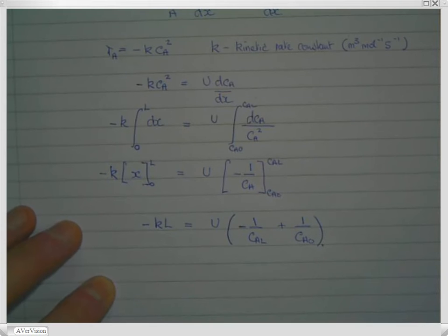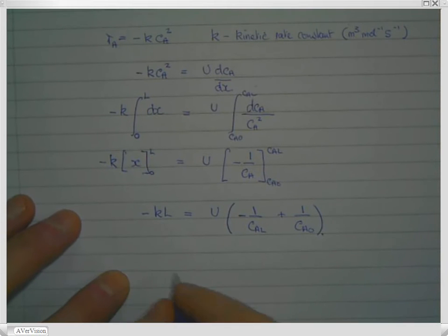And then we can just rearrange that to give us the required length. So you get that L equals, we've taken the minus K over to that side. So we're dividing both sides by minus K, so that gives you U over K, and we take the minus inside the brackets. And that gives us 1 over Ca L minus 1 over Ca naught.